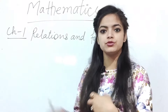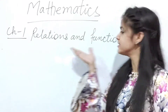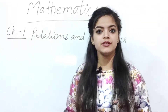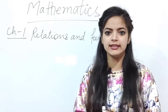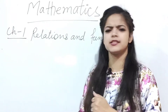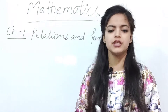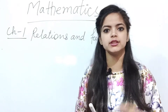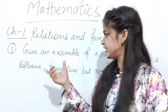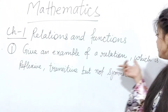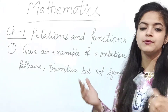Today we will go according to your chapters. The first chapter is Relations and Functions. The main question in Relations and Functions is about three types of relations. First, you should know the three types of relations. Here we have an example: give an example of a relation which is reflexive, transitive but not symmetric.